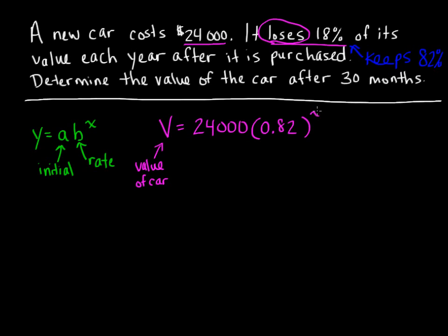Then we're going to have the exponent x here. In this case x is representing the number of years since the car was purchased. Now we have an exponential function that we can use to solve the problem.